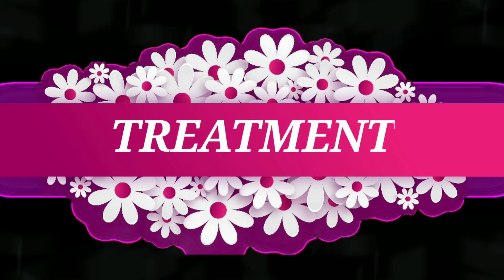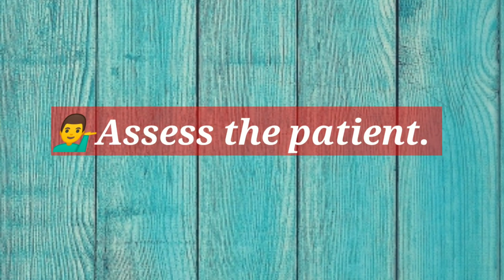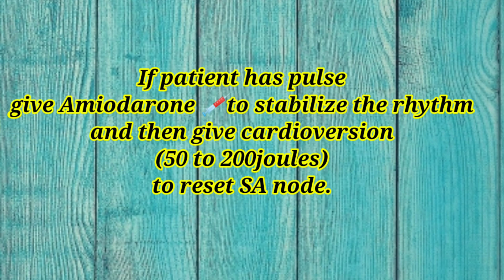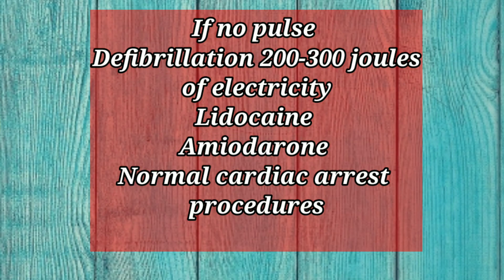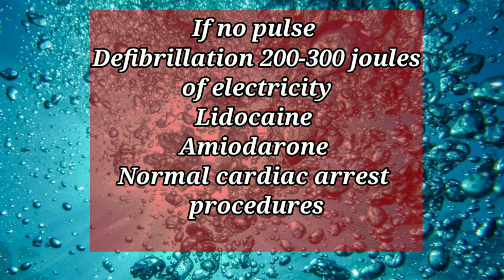Let's discuss the treatment in detail. The first and foremost thing is to assess the patient. Second, if the patient has a pulse, give amiodarone to stabilize the rhythm, and then give cardioversion at 50 to 200 joules — this is a synchronized shock mainly given to reset the SA node. If there is no pulse, defibrillate the patient at 200 to 300 joules of electricity, and give lidocaine to relax the ventricle and amiodarone to stabilize the rhythm. Finally, follow the normal cardiac arrest procedures.